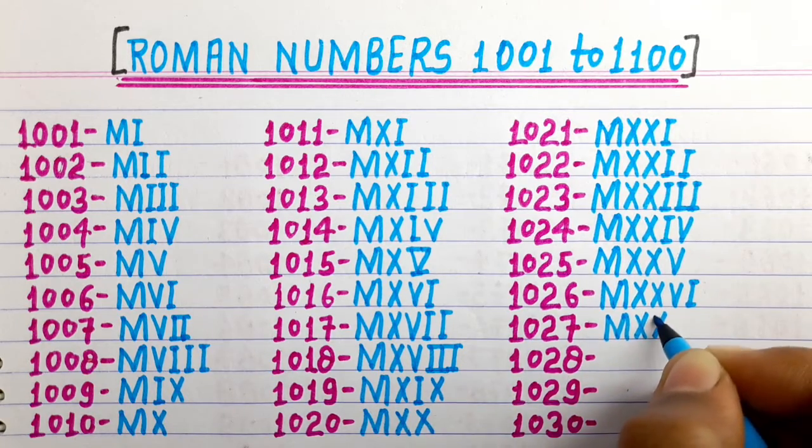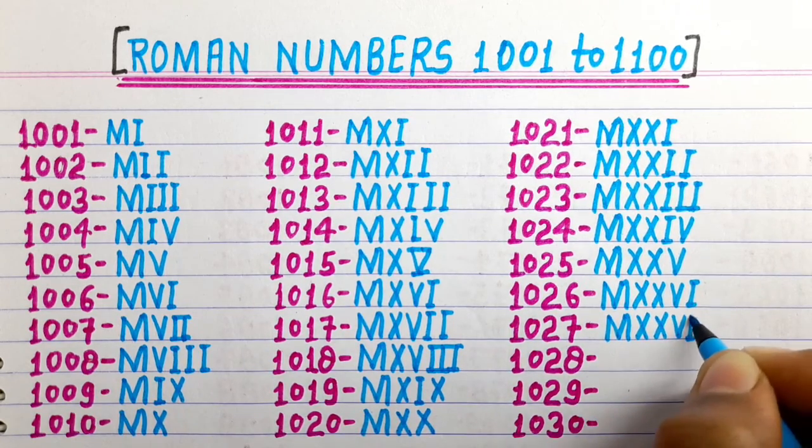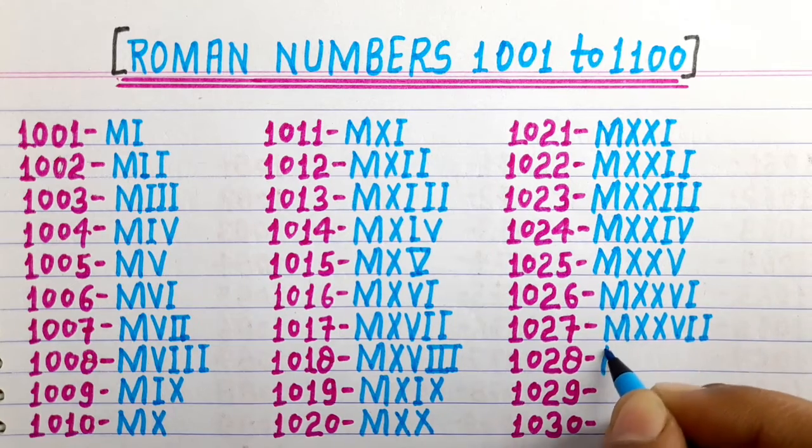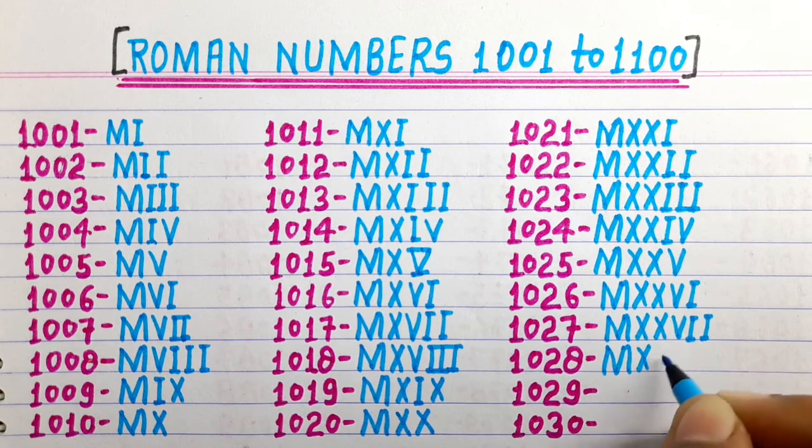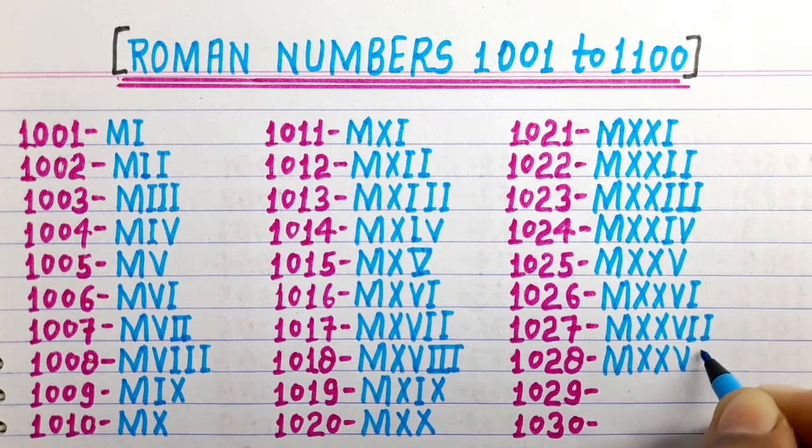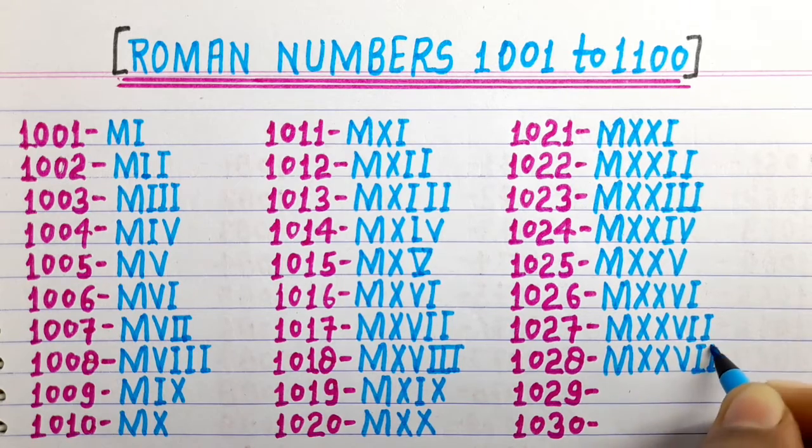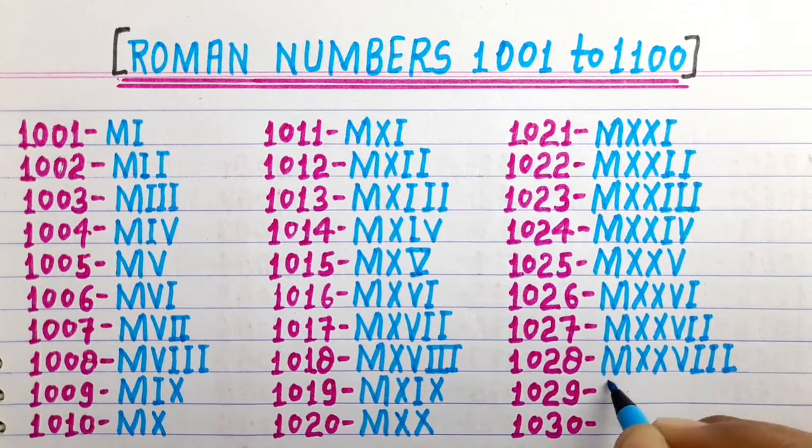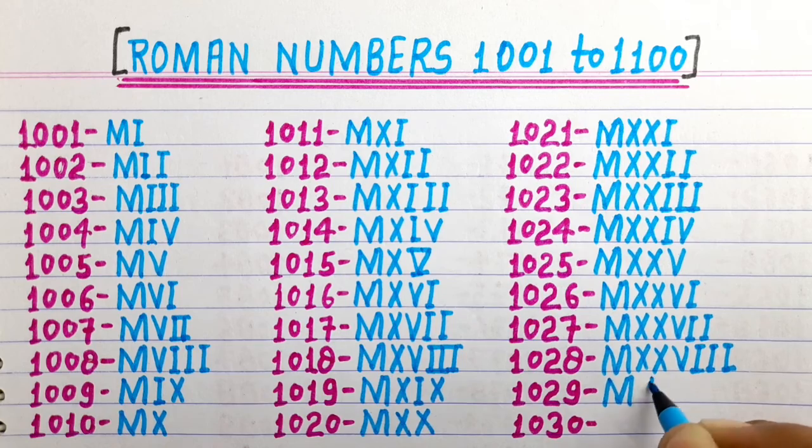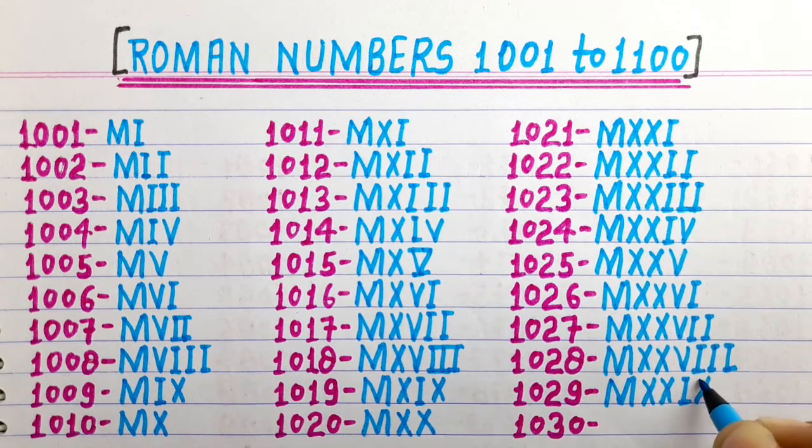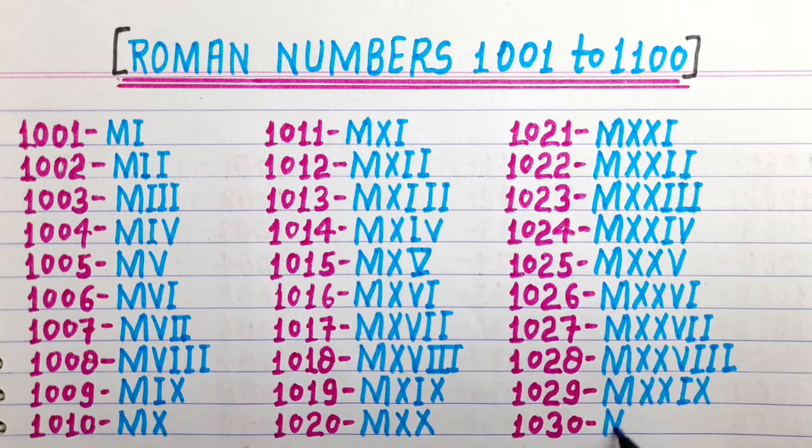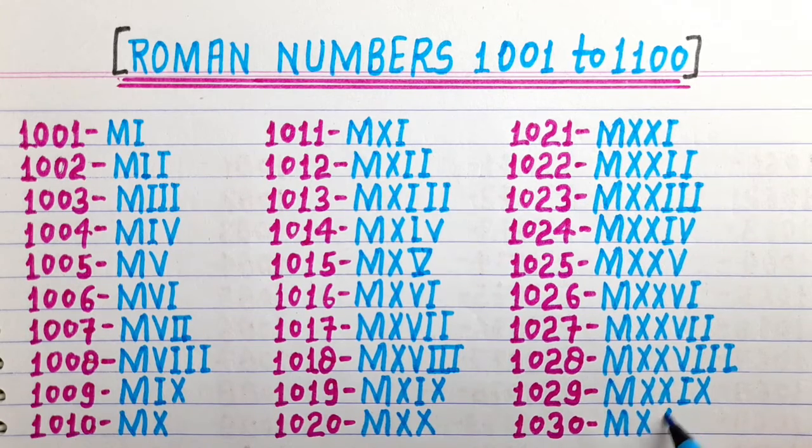1027 MXXVII, 1028 MXXVIII, 1029 MXXIX, 1030 MXXX.